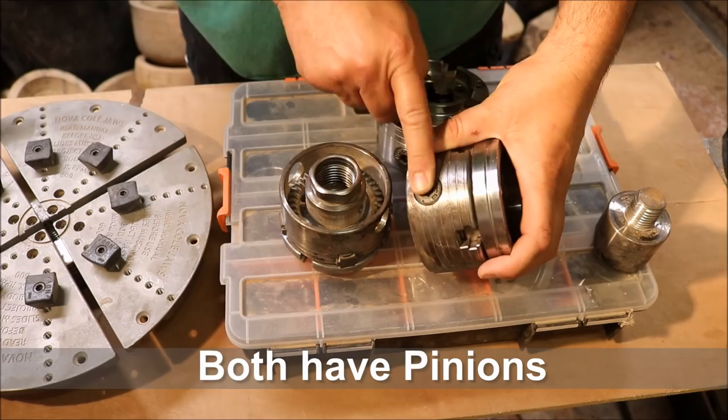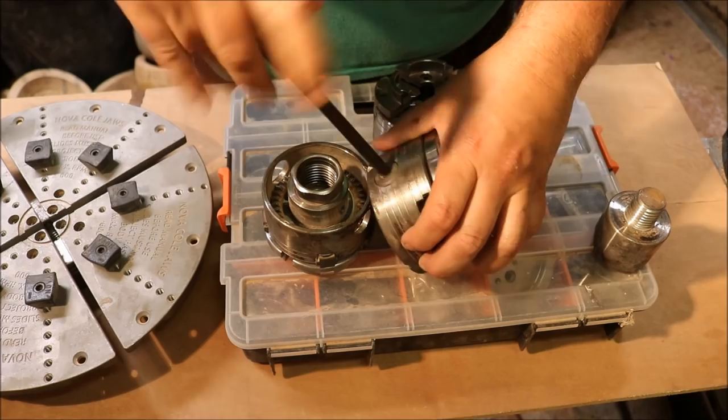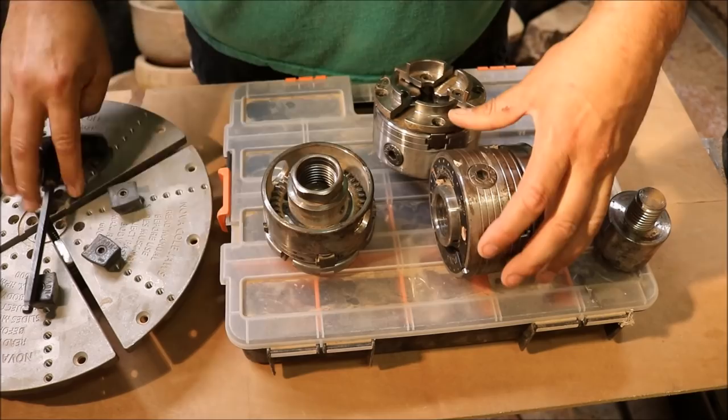It comes with a handle and a little hex wrench that goes into it. And to tighten and loosen, you just turn it either way and it pops back out. It kind of secures as it goes in.